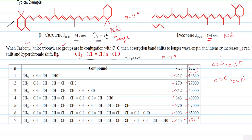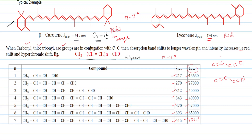This is all about the basic terms in UV-Vis spectroscopy and the effect of conjugation. In the next video, we will see the calculation of λmax by the Woodward-Fieser rule.